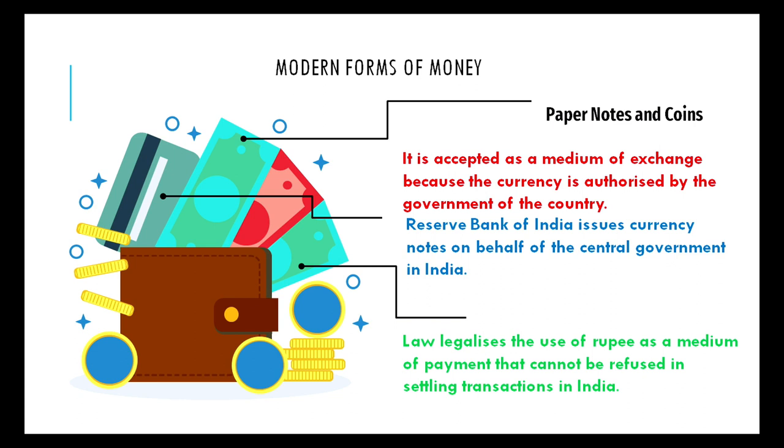If you look at any currency note, it reads: 'Main dharak ko itne rupaye dene ka vachan deta hoon,' signed by the Governor of RBI. This is because money is legal tender — it is authorized by the Government of India. The Reserve Bank of India issues currency notes on behalf of the central government, and the central government must mortgage the same amount of gold with the RBI to ensure that much currency is issued.